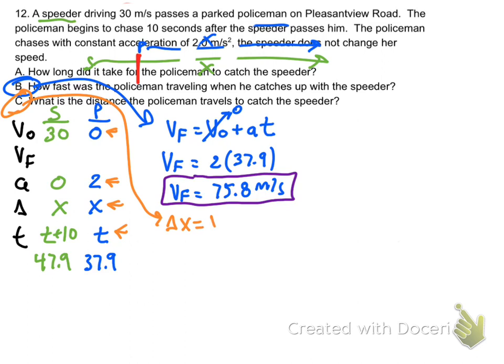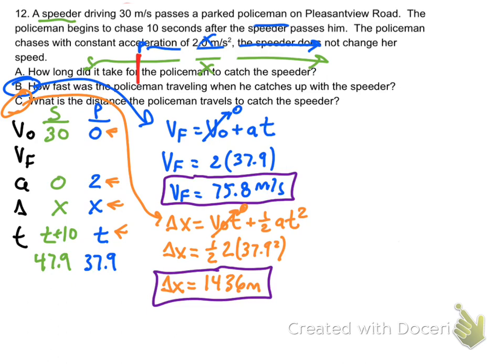Then for part C, how far? We use our delta x equation, and we substitute in one-half times the acceleration times the time squared, which is 37.9. We get delta x is 1,436 meters.